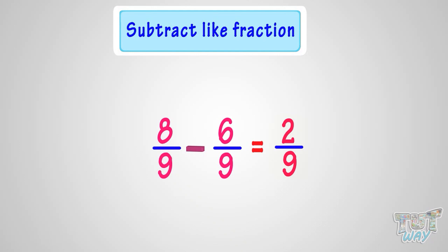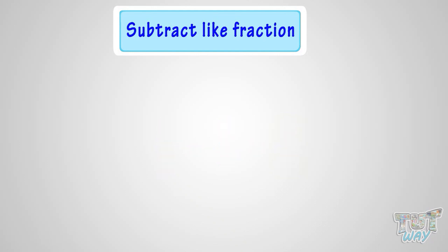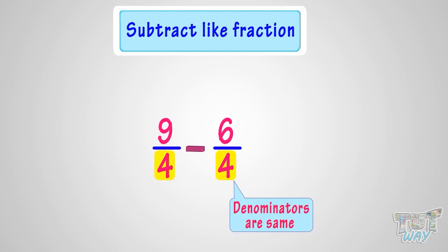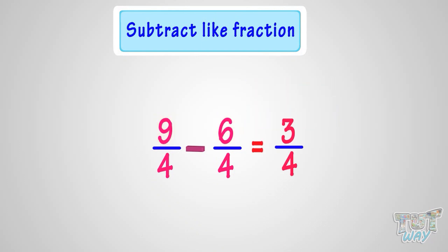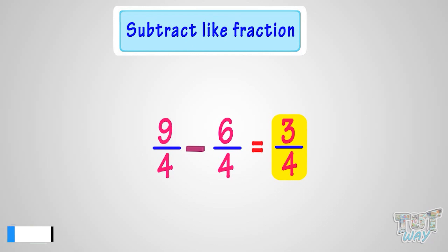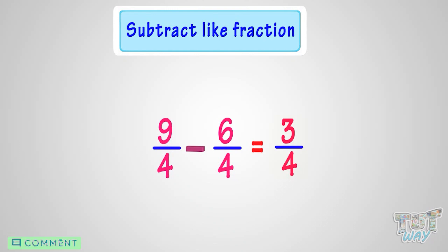Here we have another example. We have to subtract 6 by 4 from 9 by 4. These are like fractions. We just have to subtract the numerators in order to subtract the fractions. Subtracting the numerators, that is subtracting 6 from 9, we get 3. So our answer is 3 by 4. 3 by 4 is the difference between 2 fractions, 9 by 4 and 6 by 4. So, adding and subtracting like fractions is very simple.